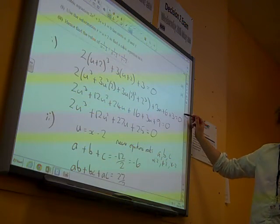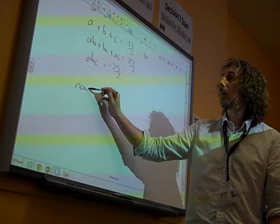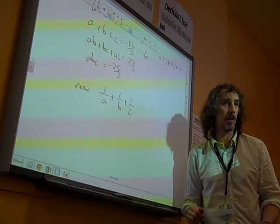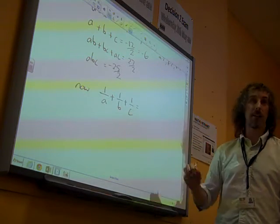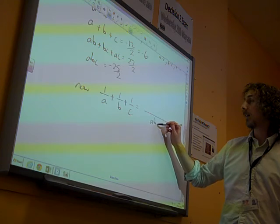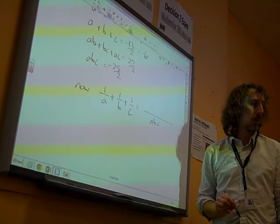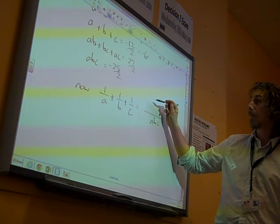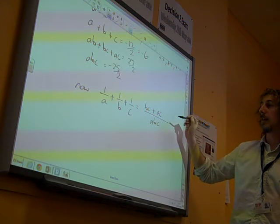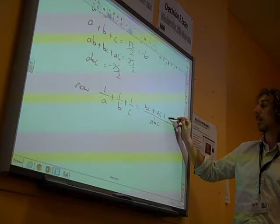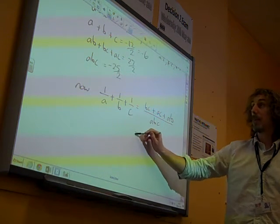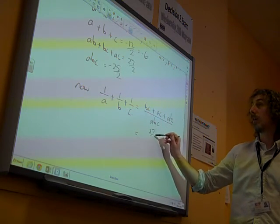So if we want to think about 1 over these things, 1 over a plus 1 over b plus 1 over c, which is the thing that we're after, if we combine that into one fraction, that's putting it all over abc. We need to multiply this first fraction by bc and the second fraction we're multiplying by ac.